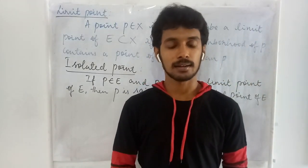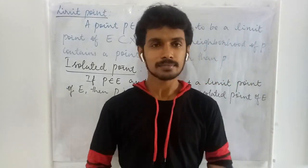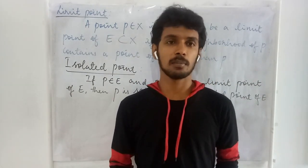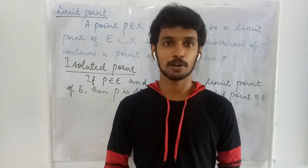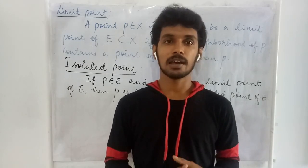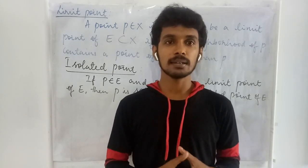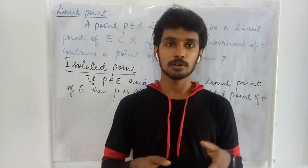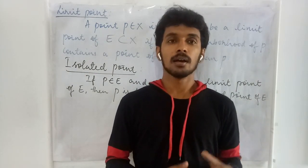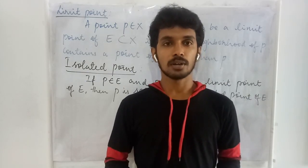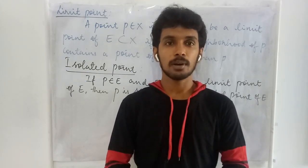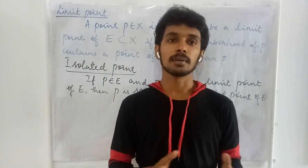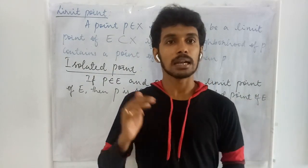Welcome to the course on real analysis. In the previous lectures we have seen the definition of a neighborhood and several examples of a neighborhood, and after that we have defined what the open set means in a general metric space setup and proved that all the neighborhoods are open sets. In this lecture we are going to define what the limit point and an isolated point are, and then we will see some relation between a neighborhood and a limit point.